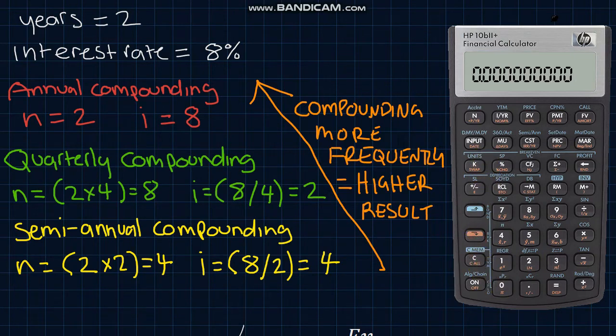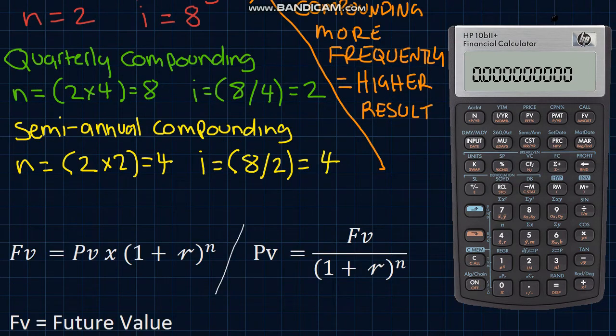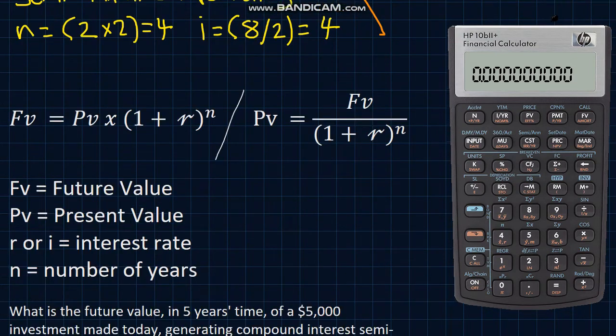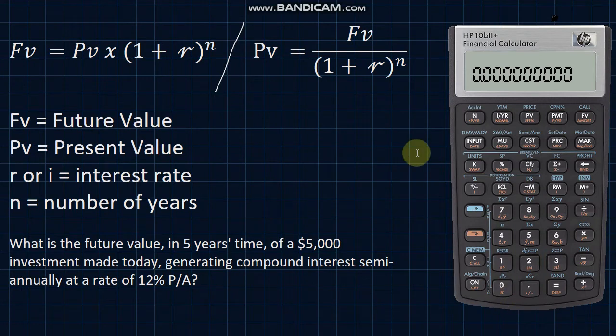So now with the memory clear, let's perform a basic time value of money calculation. I'll cover other functions and shortcuts you can take with this calculator in future videos. To perform a time value of money calculation, we need to have 3 variables and we can solve for the 4th.